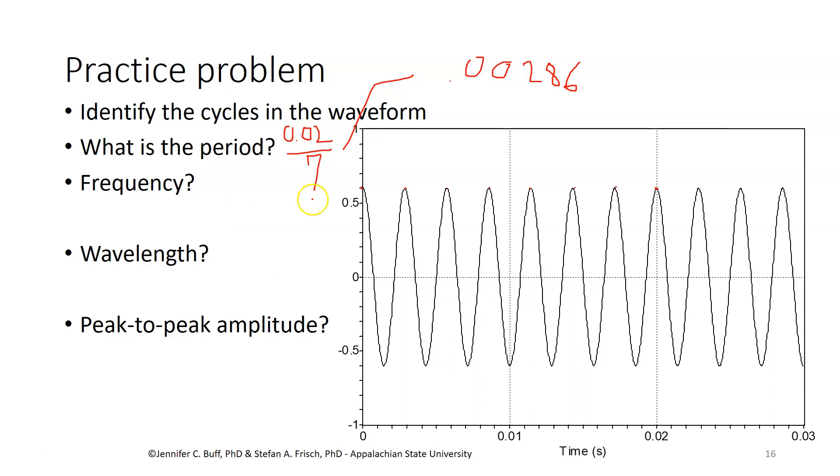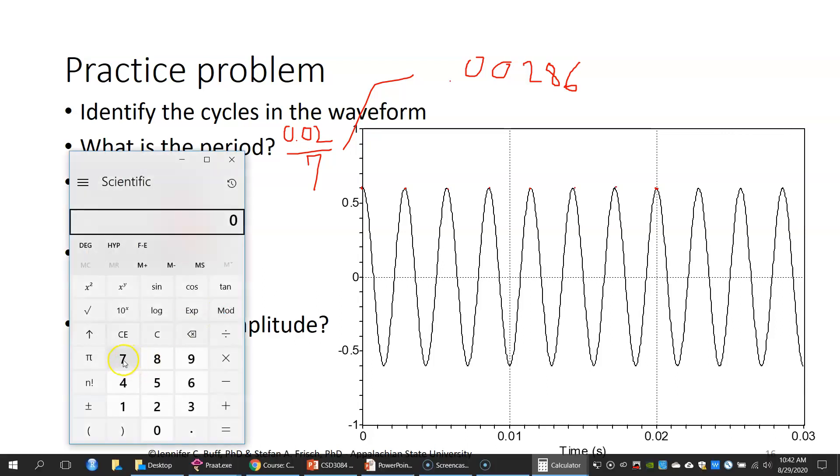The frequency then would be one over that 0.00286. Or, frequency is number of cycles over number of seconds, so that's upside down from what I just did. Seven cycles took me a total of 0.02 seconds. So, I think I'll use that. 7 divided by 0.02 is 350.